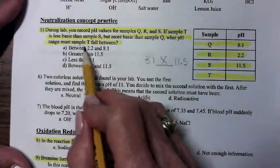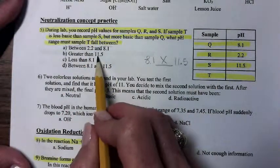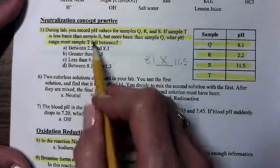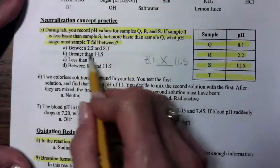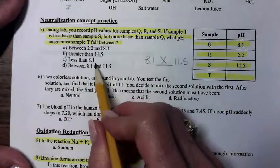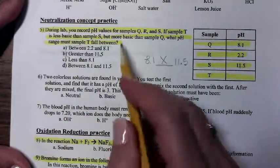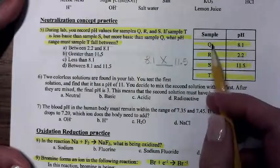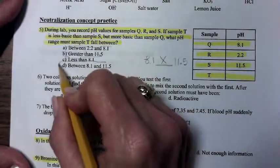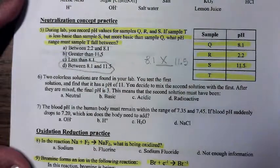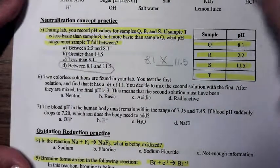Greater than 11.5? Well, no, it says right here that it's less basic than sample S. So that's 11.5. That's a no. Less than 8.1? Nope. It says that it's more basic than sample Q, which is 8.1. So my correct answer between 8.1 and 11.5. Not hard to read that table.